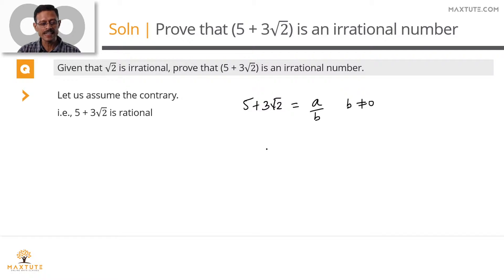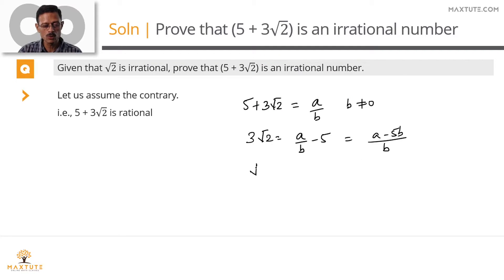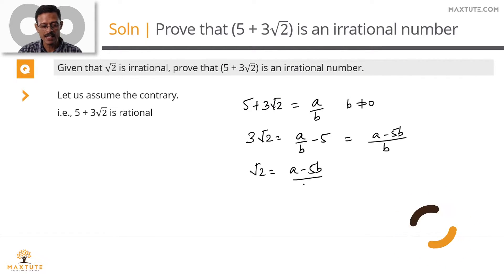Let's take the 5 to the right hand side of this equation. So we will have 3 root 2 = a/b − 5. Rewriting the right hand side with b as a common denominator gives (a − 5b)/b = 3 root 2. Dividing both sides by 3, we get root 2 = (a − 5b) / 3b.